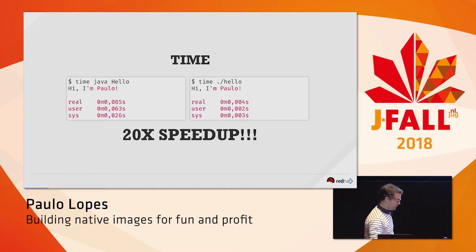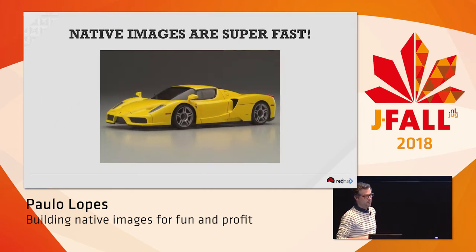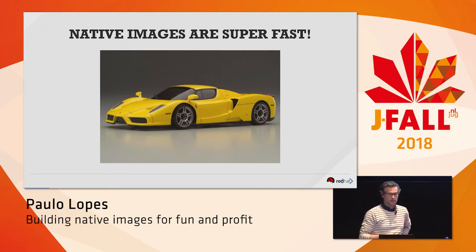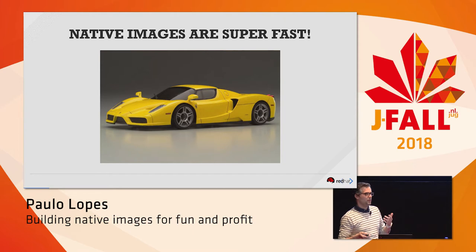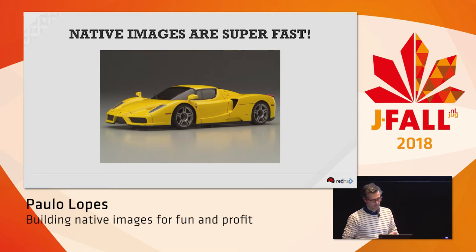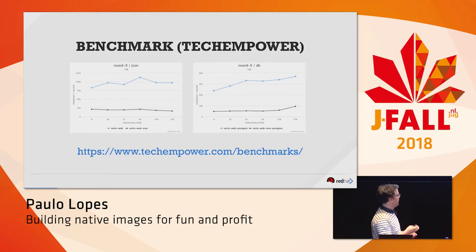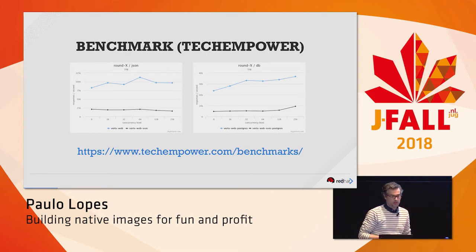So the first assumption most of us will make is that native images are super fast — it's like the Ferrari of the Java world. But again, it's an assumption. So the next step would be to compare — run a benchmark. For comparison reasons, if you run the Techempower benchmark, which you can find on their website, you'll find very interesting numbers.